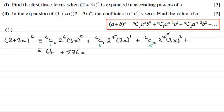6C2 is 15, 2 to the power 4 is 16. Here you've got 3 squared, which is going to give us 9. So 15 times 16 times 9, then multiplied by x squared gives you 2160x², and again just plus and so on. So there's our expansion in ascending powers of x.